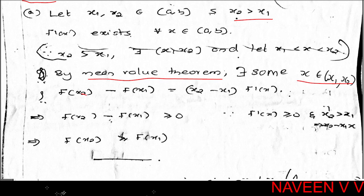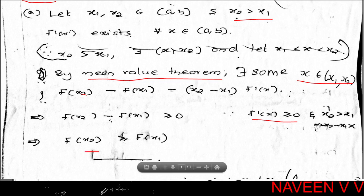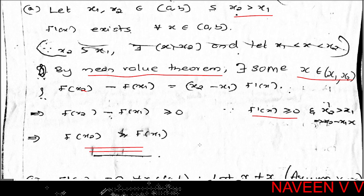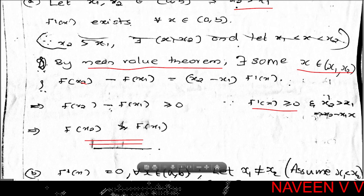Since x2 > x1, we have x2 - x1 > 0. By assumption, f'(x) ≥ 0. So the right-hand side is ≥ 0, which means f(x2) - f(x1) ≥ 0, that is f(x1) ≤ f(x2). Since x1 < x2 was arbitrary in open interval (a, b), we have f(x1) ≤ f(x2).